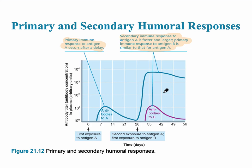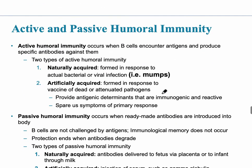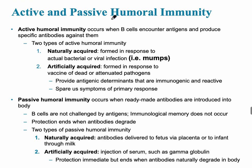Now let's look at active and passive humoral immunity. Remember, whenever you see the word humoral, think liquid — specifically B cells. Humoral immunity occurs when the B lymphocytes encounter antigens and produce specific antibodies against them.